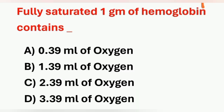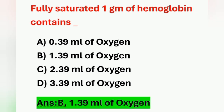Next question: Fully saturated, 1 gram of hemoglobin contains how many ml of oxygen? Options: A) 0.39 ml, B) 1.39 ml, C) 2.39 ml, D) 3.39 ml. Saturated 1 gram of hemoglobin contains 1.39 ml of oxygen. Option B is the correct answer.